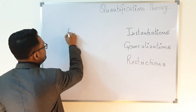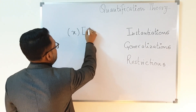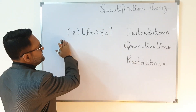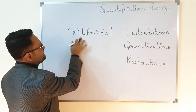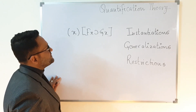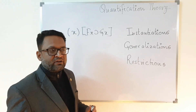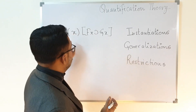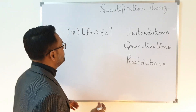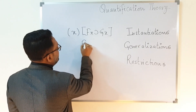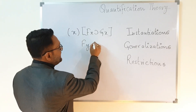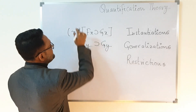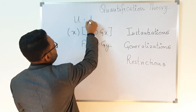Let us first understand what instantiations are. Suppose we have a proposition like 'for all x, fx implies gx'. This proposition is bounded by the universal quantifier x. In order to use the 19 rules, CP, IP, or SCP, we need to remove this quantifier. We do this by taking an arbitrarily chosen variable y and instantiating with it. This is called universal instantiation, or UI.